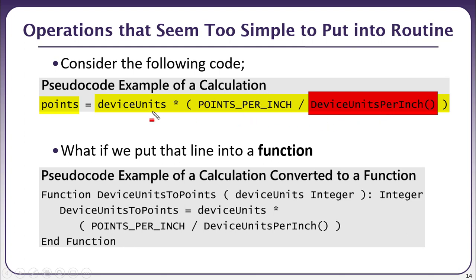If we define a function with the name 'device units to points' and pass the units as an integer, we can encapsulate that straightforward calculation cleanly.